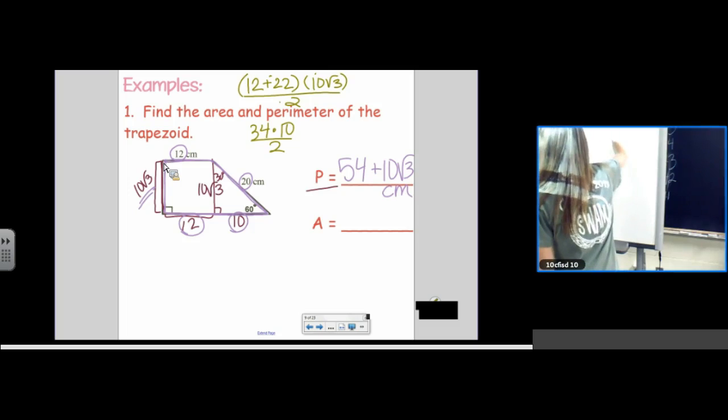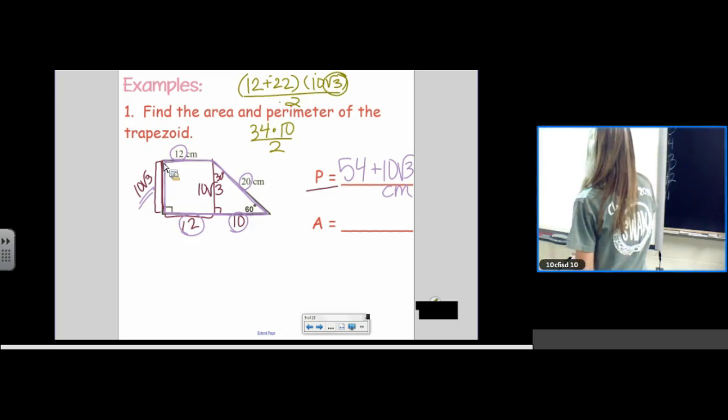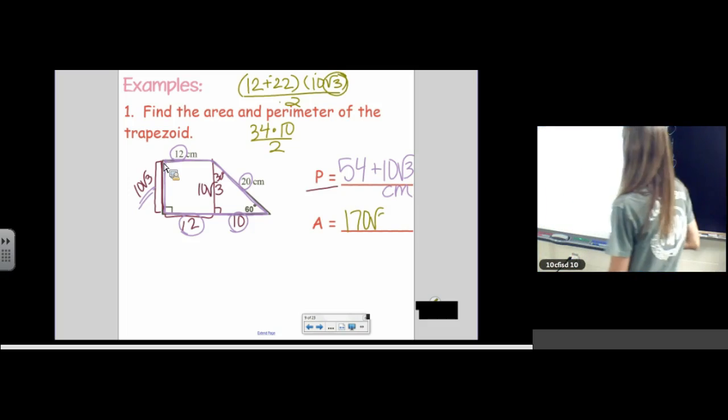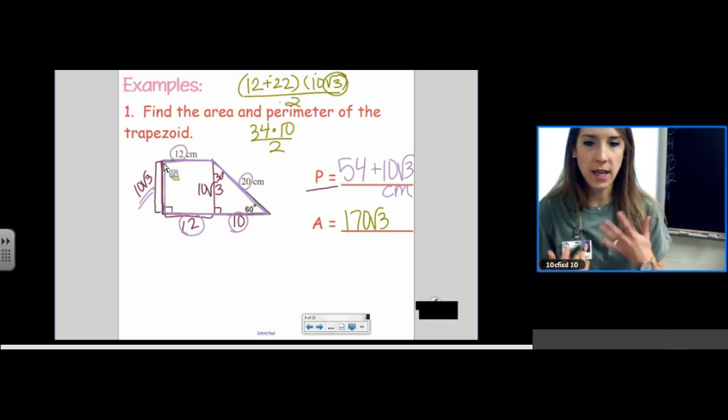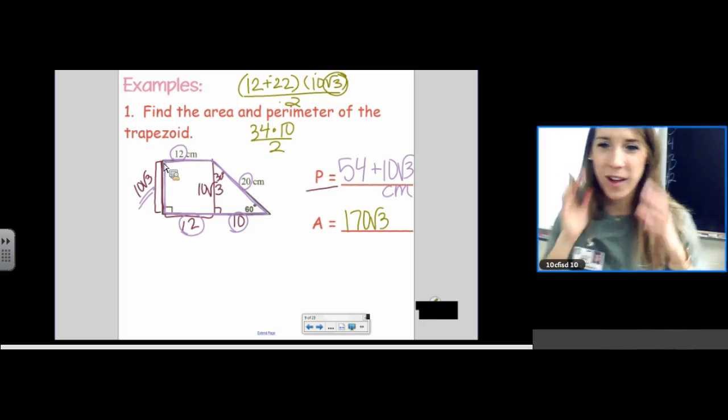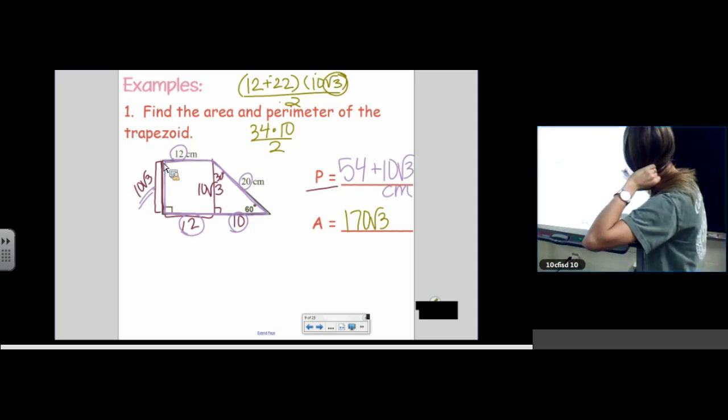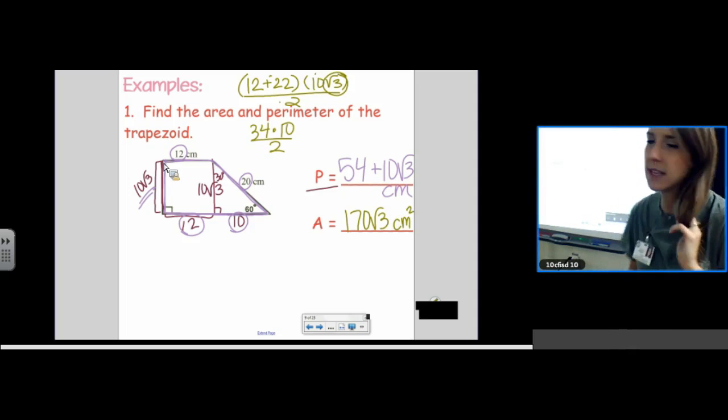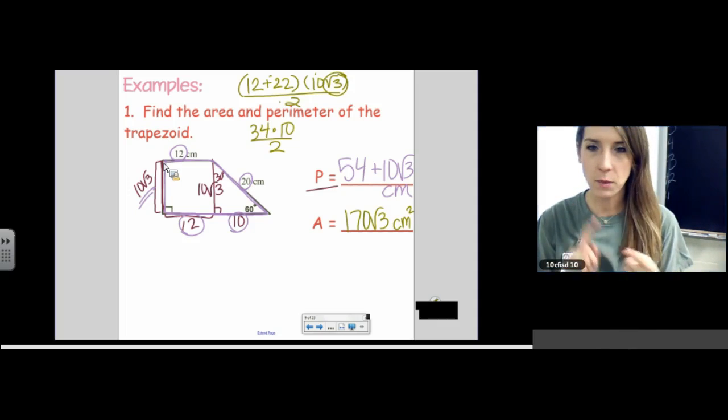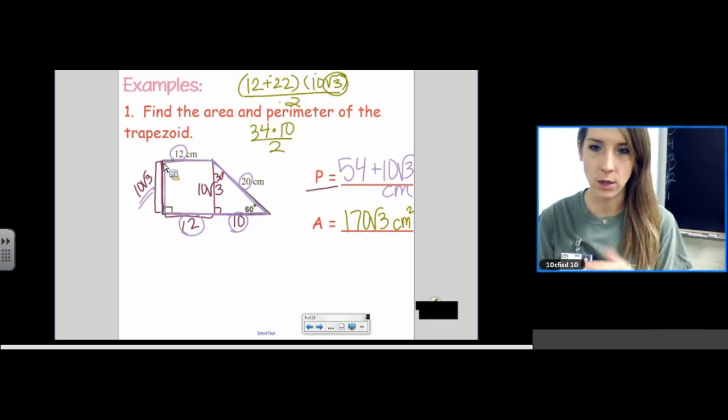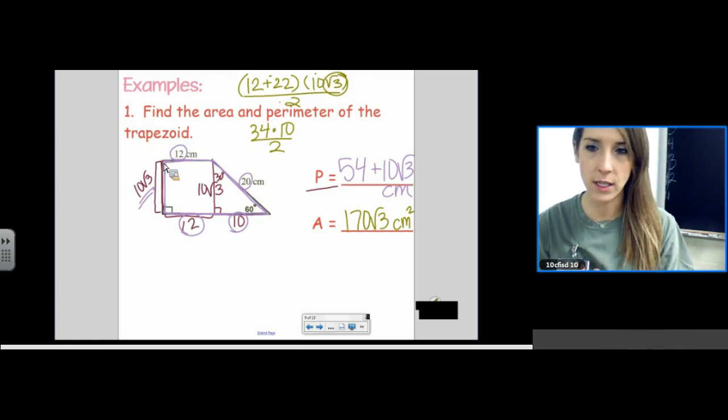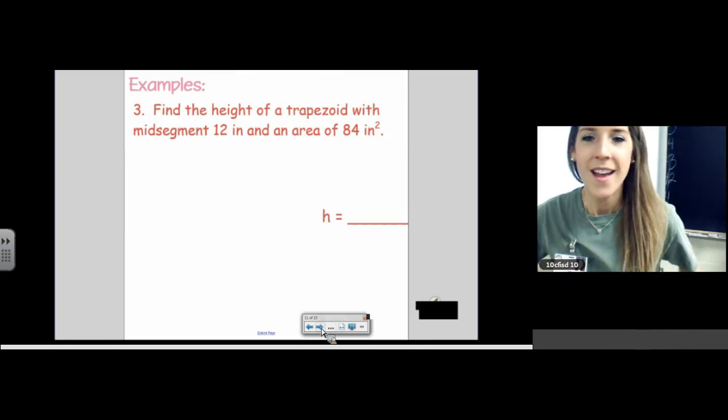And then, we multiply back in our root 3 at the end. This is not adding. This is multiplying, so it does work a little bit different. So, 170 root 3 centimeters squared is the area. Base 1 plus base 2 times the height divided by 2. So, see how working with radicals works differently when you're adding versus multiplying.